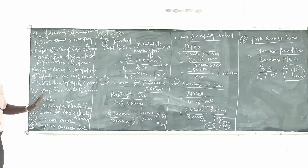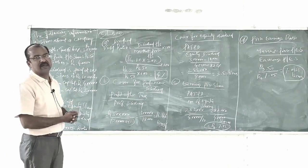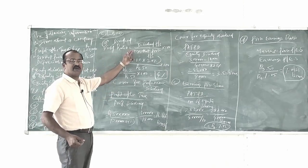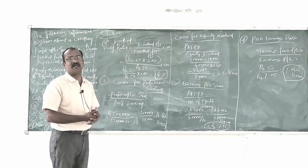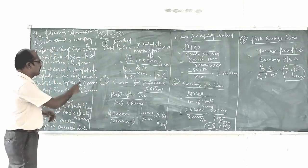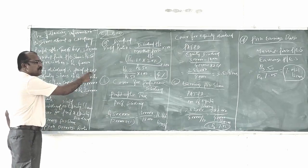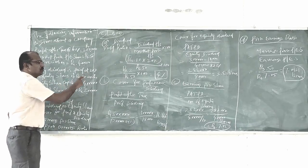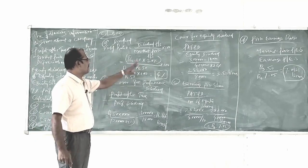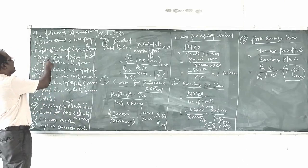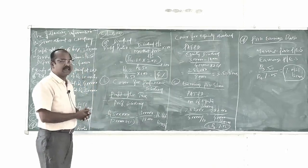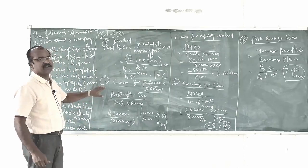The first ratio is dividend yield on equity share. The formula for dividend yield ratio is: dividend per equity share divided by market price, into 100. Here we study the relationship between the market price per equity share and the dividend per equity share in terms of percentage. The dividend per equity share is 20% of the book value: Rs. 10 into 20% = Rs. 2. So Rs. 10 into 20% divided by the market price per share of Rs. 50, into 100, gives us 4%. The dividend yield ratio is 4%.